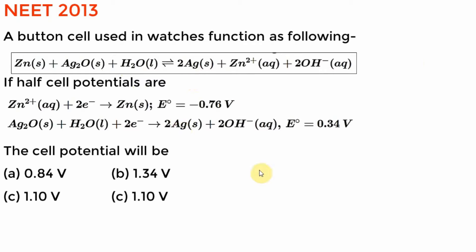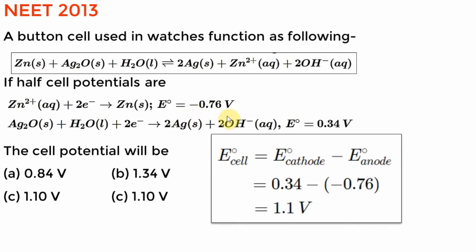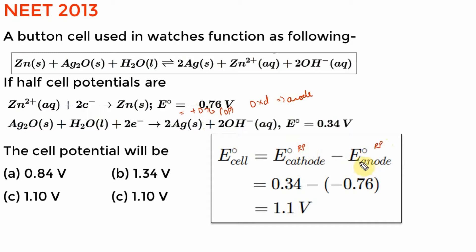We have these two reactions. Zinc is on the left side in the target, so I have to flip the first equation. Ag₂O is on the left in the target — it matches. So just flip the zinc equation and add them. If you flip it, the zinc potential becomes +0.76 V (oxidation potential). E° cathode minus E° anode gives 1.1 volt — very similar to our Daniel cell potential.